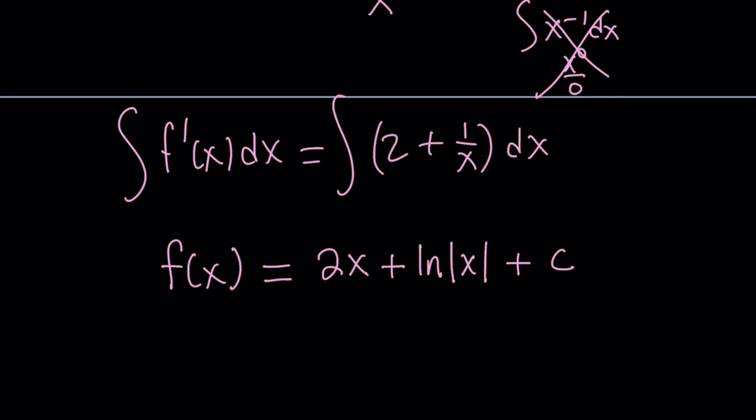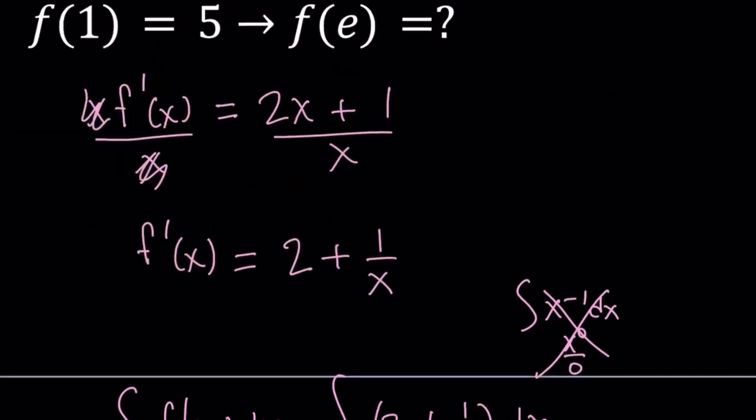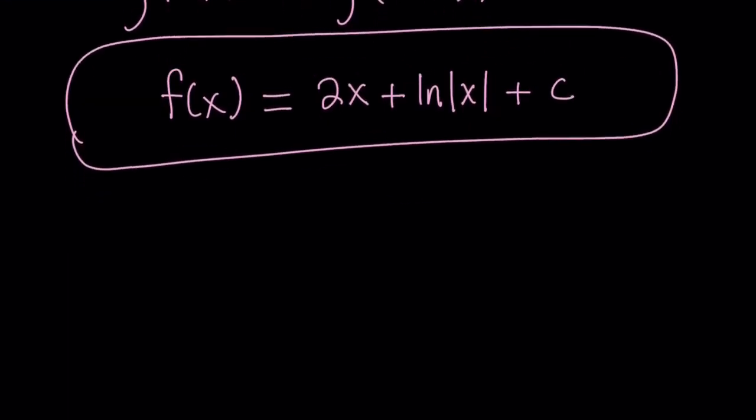So this is an expression for f of x. That's actually really cool. If they asked us to find f of x, this will be the answer. But we're looking for something else. We know f of 1 is equal to 5, so let's write it down. f of 1 equals 5.